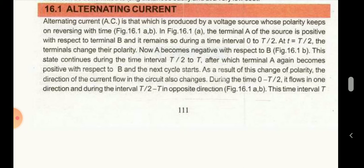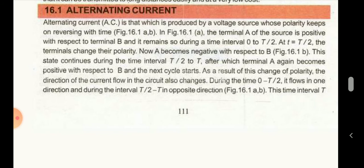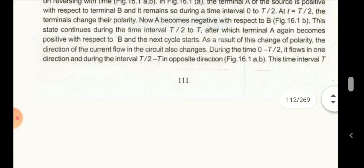So, what is alternating current? The first line is the definition of the alternating current. The alternating current is also sometimes written as AC current. AC is the abbreviation of alternating current. Alternating current is that which is produced by the voltage source whose polarity keeps on reversing with time — yani, is ki jo polarity hai, wo wakt ke saath change hoti rahati hai.